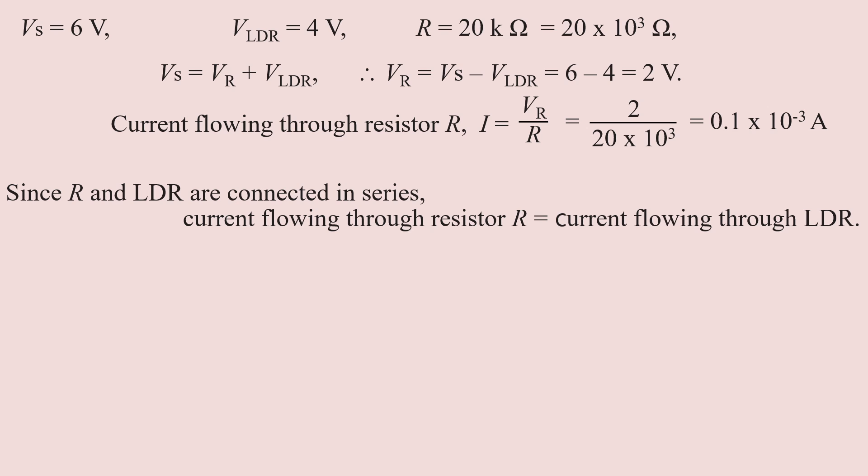Since the fixed resistor and LDR are connected in series, the current flowing through the resistor R is equal to the current flowing through the LDR. The resistance of the LDR equals V_LDR divided by I.